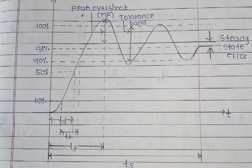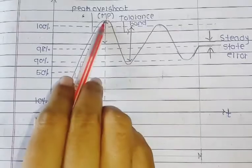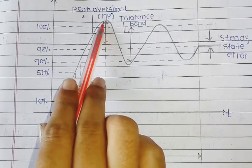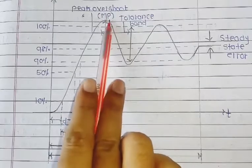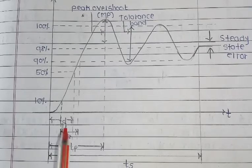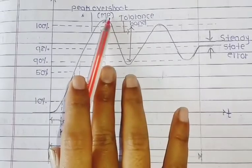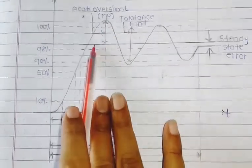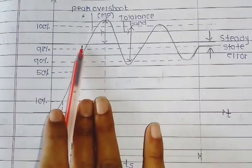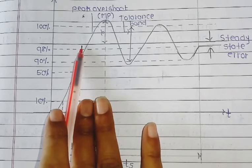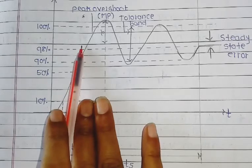Next parameter is peak overshoot, denoted as Mp. Peak overshoot is the normalized difference between the peak overshoot and the final steady-state value of the time response. Mathematically, percent overshoot equals maximum overshoot upon final value into 100. The formula is: percent Mp equals C(tp) minus C(ss) upon C(ss) into 100.